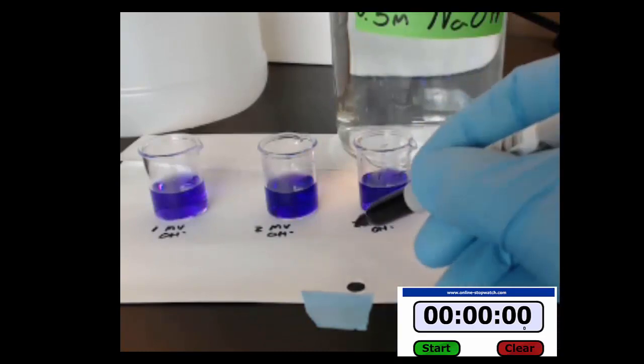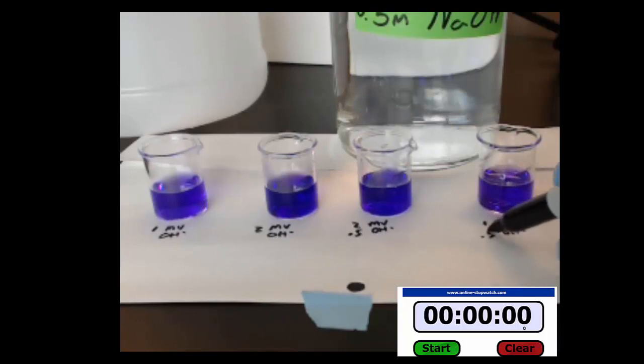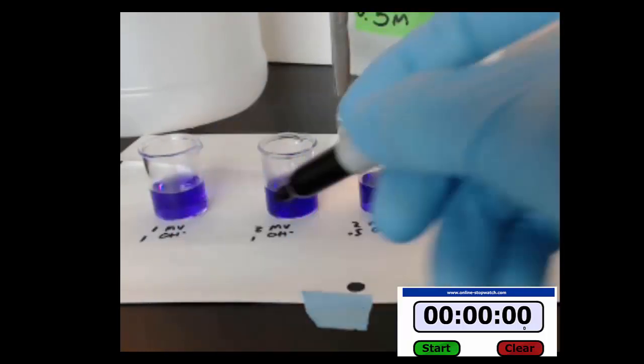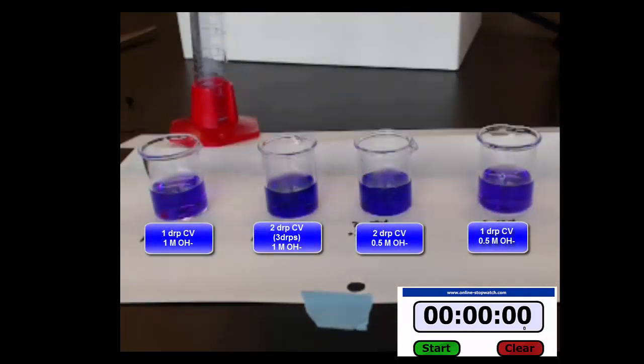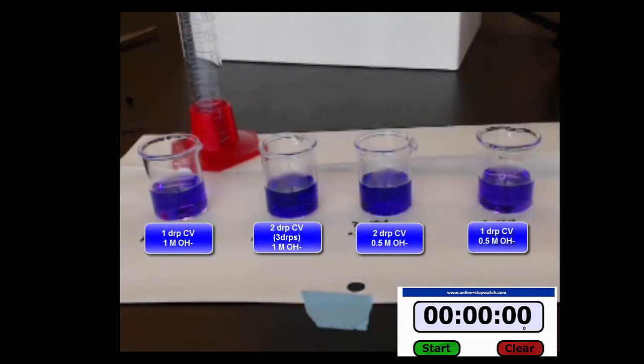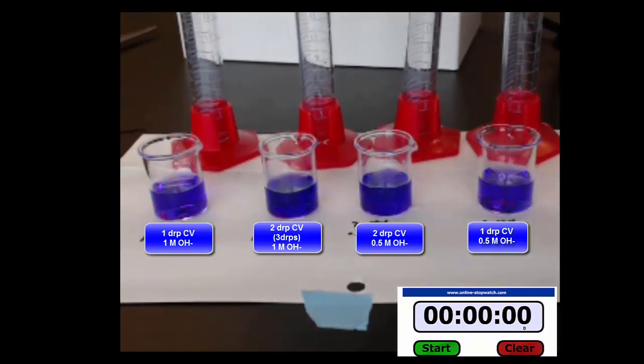two drops, two drops, one. On this side, I'm going to add 0.5 molar, and on this side, I'm going to add one molar. I'm going to add the exact same amounts to each—four mils. Four mils of one molar to this and four mils of a half molar to this side.